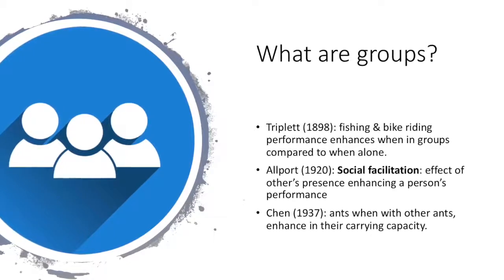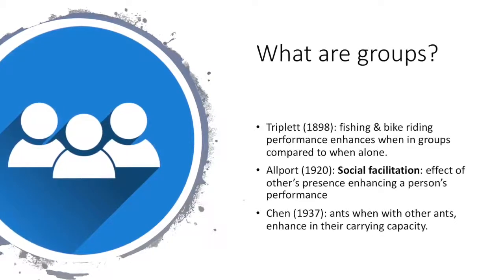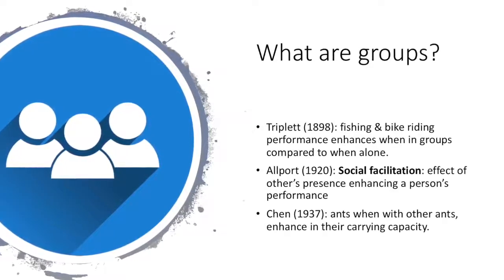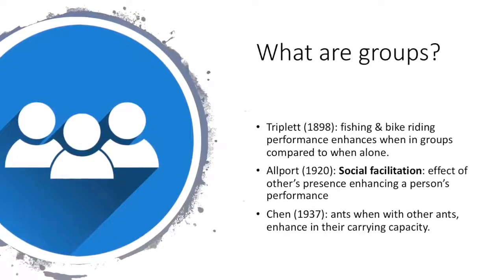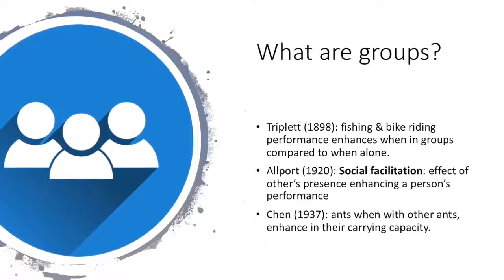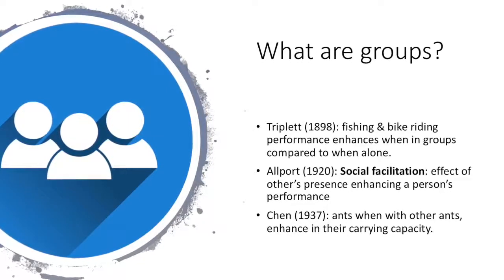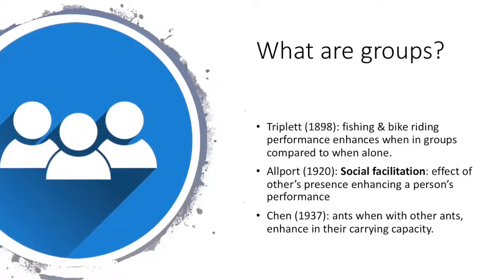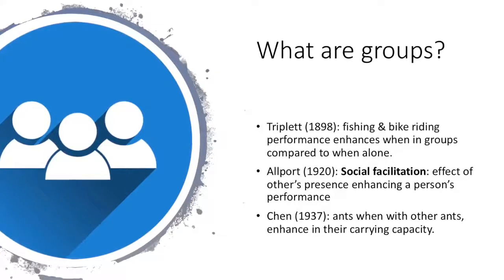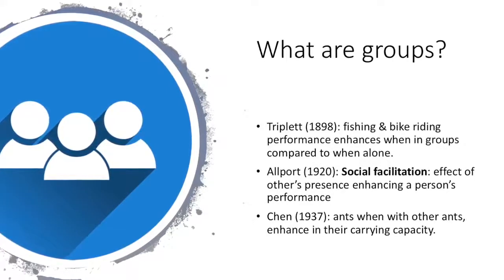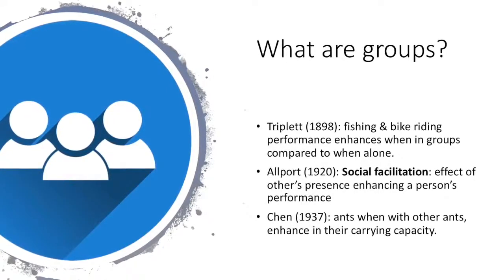Allport in 1920 discovered that children performed better in multiplication problems if four or five other children were present. The effect of others' presence enhancing a person's performance became known as social facilitation.